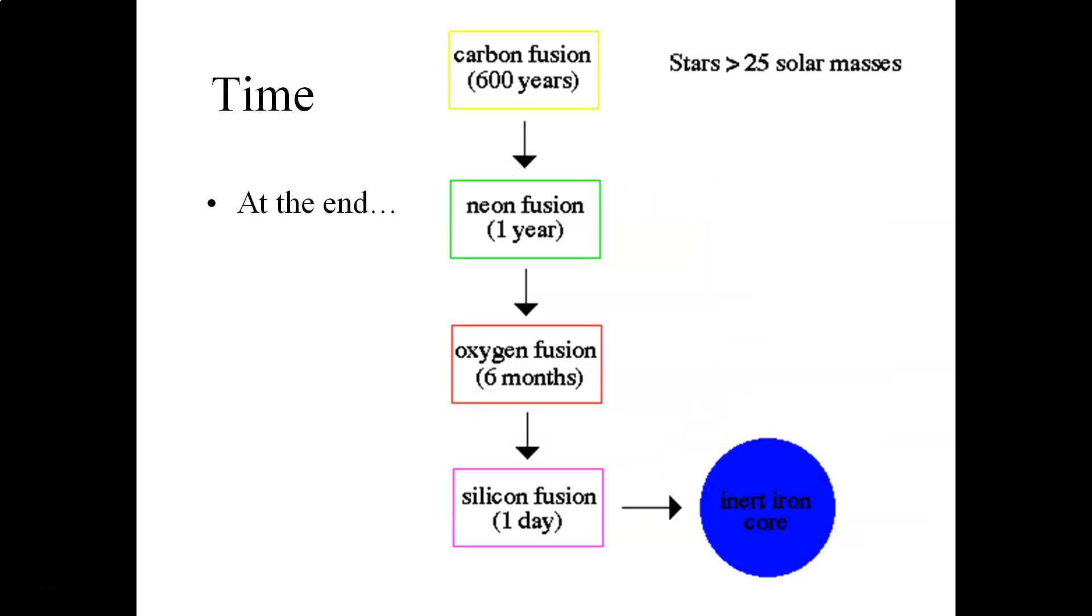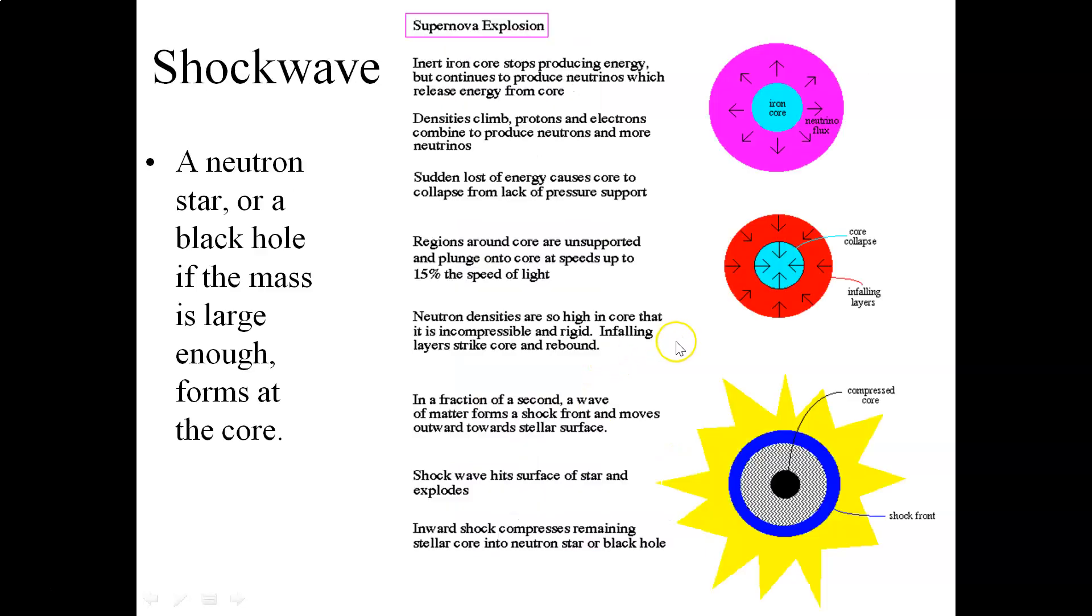In the time sequence of events, right when the star reaches the end of its life, particularly for extremely high-mass stars, such as stars that are greater than 25 solar masses, the sequence of events are increasingly shorter in duration. Carbon fusion only lasts for about 600 years, neon fusion for about a year, oxygen fusion for about six months, silicon fusion for just a day, and then you end up with the inert iron core, and then the star undergoes final gravitational collapse.